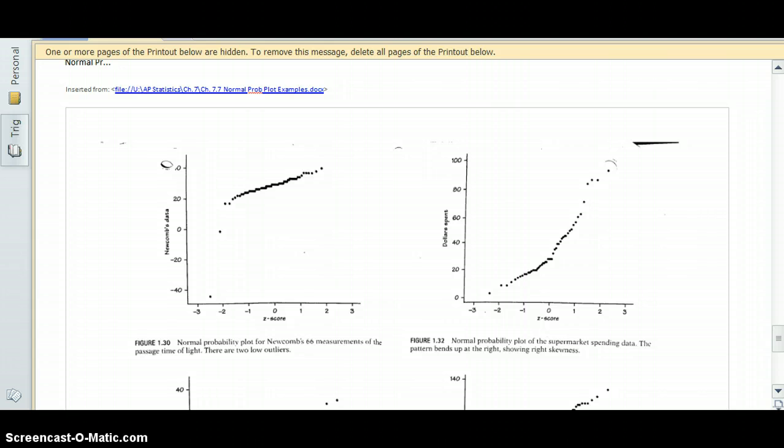So the first example that we're looking at is a normal probability plot for Newcomb's 66 measurements of the passage time of light.